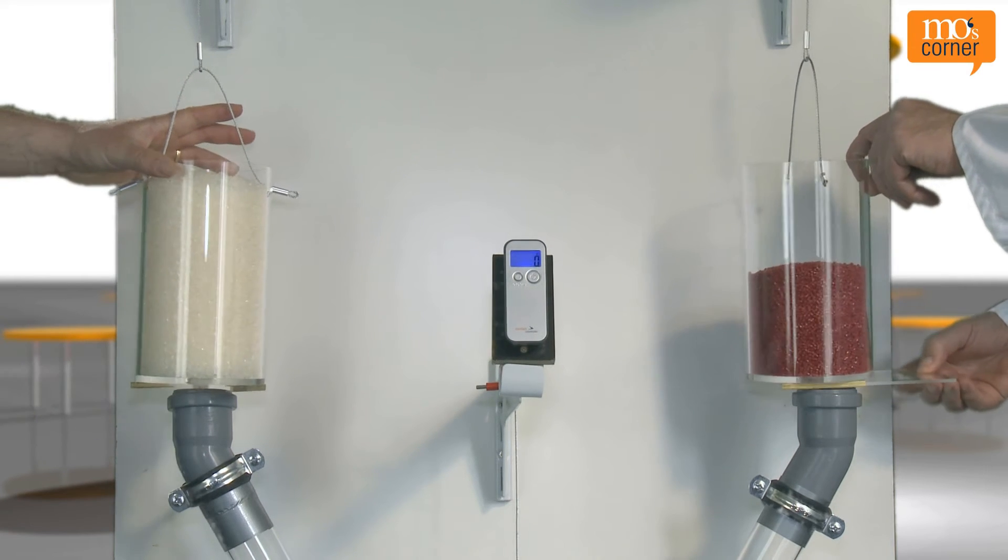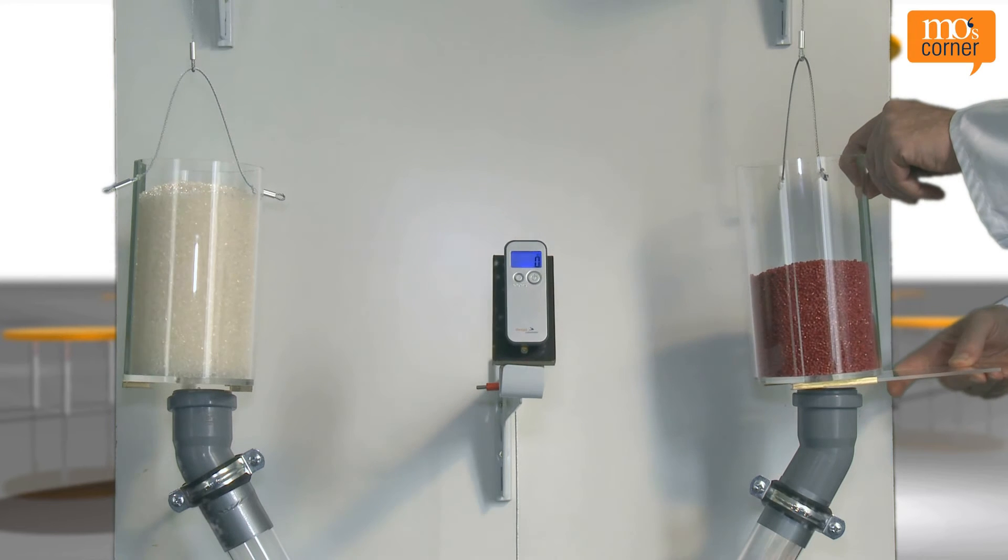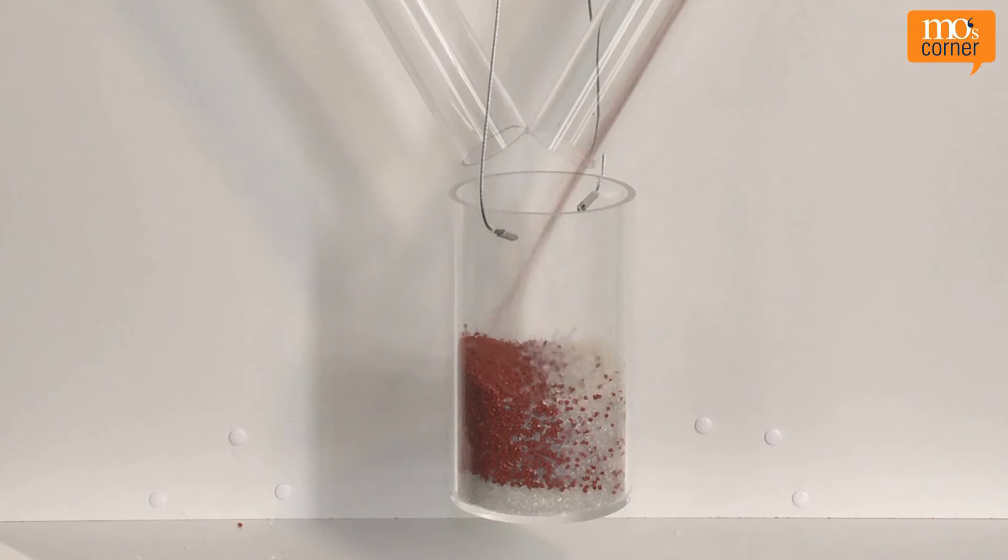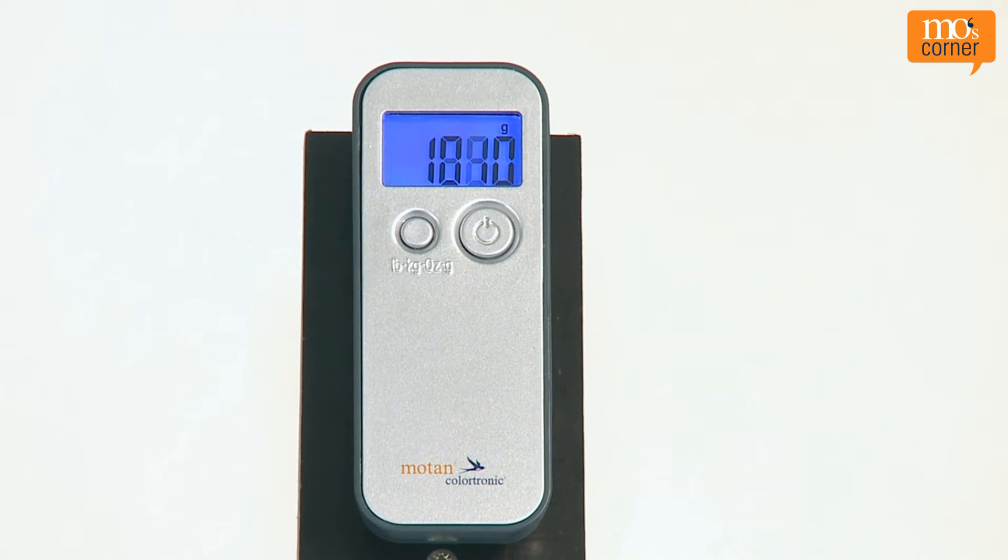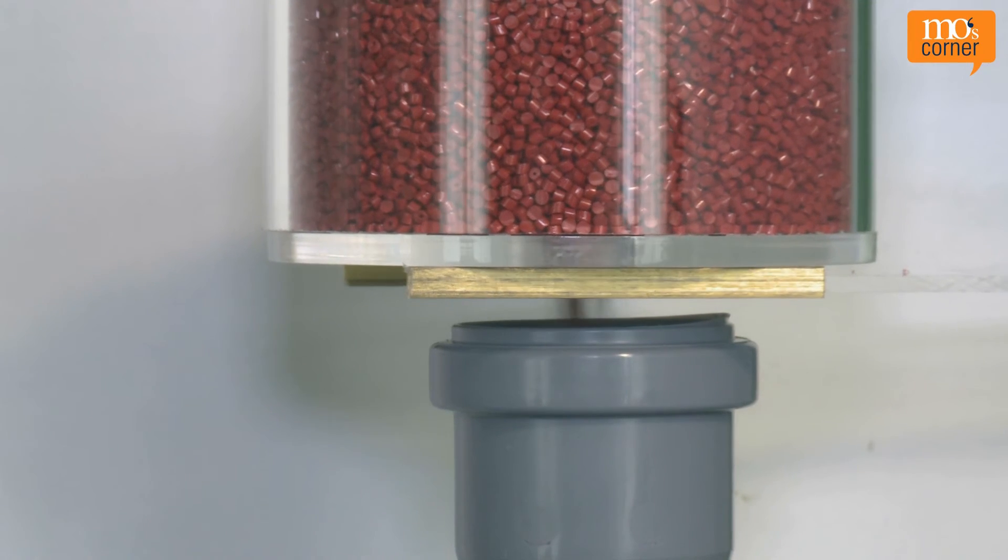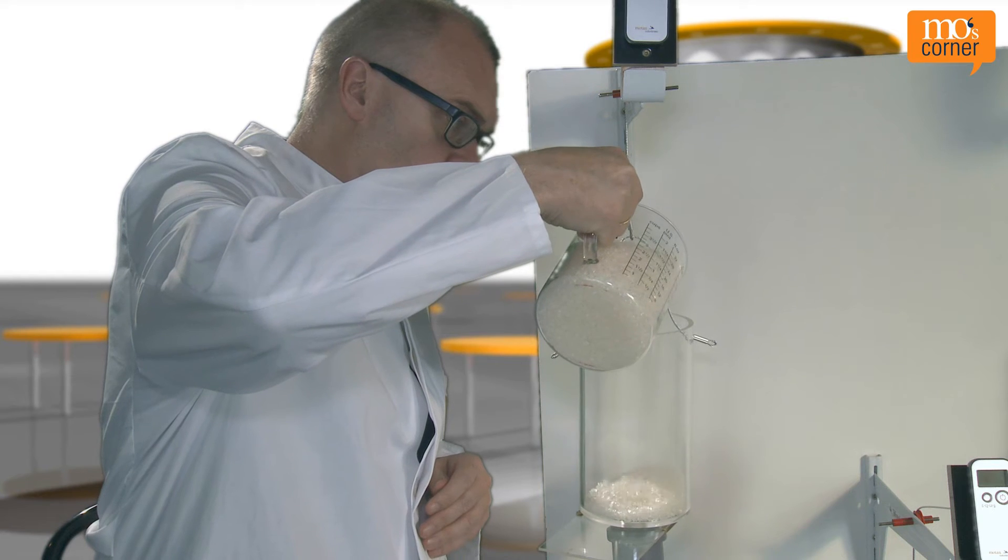For gravimetric dosing, we differentiate between two measuring principles: gain in weight and loss in weight. For gain in weight, the weight gain is measured in the destination container. For loss in weight, the weight loss in the source containers is measured as they're emptied.